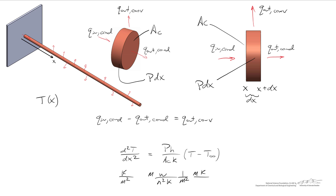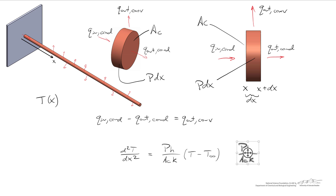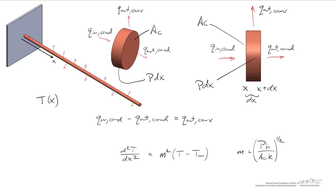One over the area is one over meter squared. For the thermal conductivity we have meters Kelvin over watts as a reciprocal. After canceling watts and meter squared, the right-hand side gives Kelvin per meter squared — matching the left-hand side, so the units check out. To save on notation, I'm going to define a parameter m equal to the square root of hP divided by kA_C.